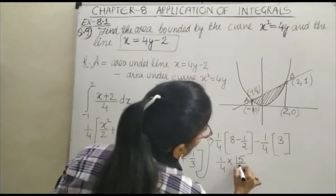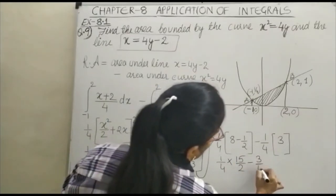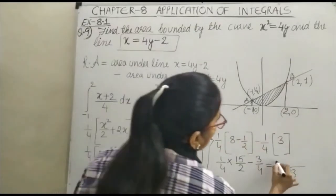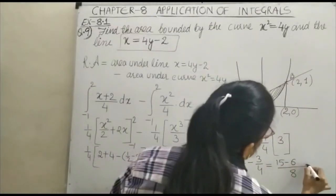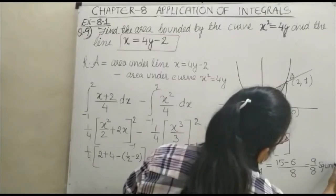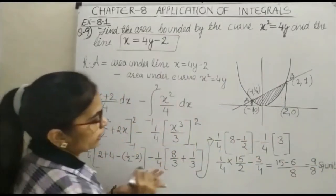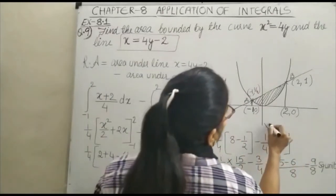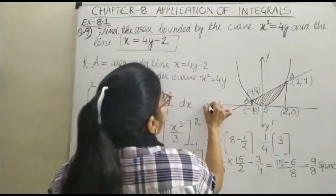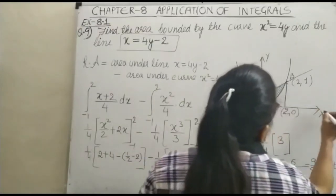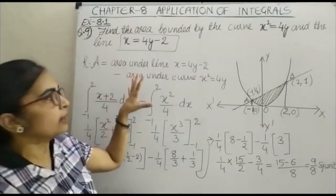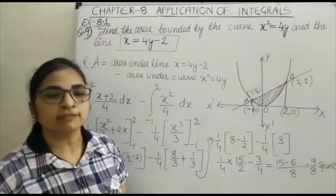So the required area equals (1/4)(15/2) minus 3/4. Taking LCM: (15/8) - (6/8) = 9/8 square units. The required area bounded by the curve x² = 4y and the line x = 4y - 2 is 9/8 square units.